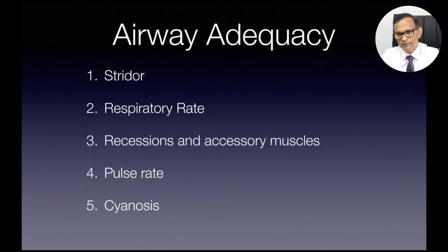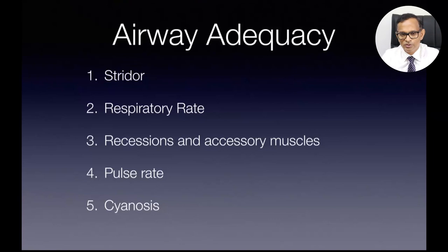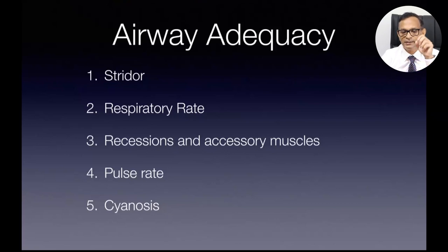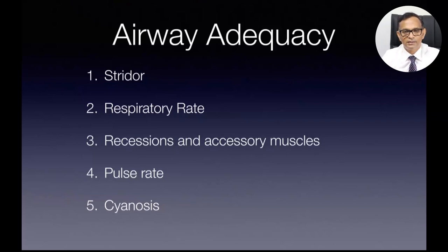The concept of airway adequacy — whether the patient can have good oxygenation — is most important. There are five things to know: stridor, increased respiratory rate, recessions, increased pulse rate, and cyanosis. If a patient comes with breathing difficulty and stridor, don't wait until the patient becomes really bad or cyanosed — send the patient to an acute care treatment unit as quickly as possible. Don't wait until cyanosis happens; that is a very late sign.